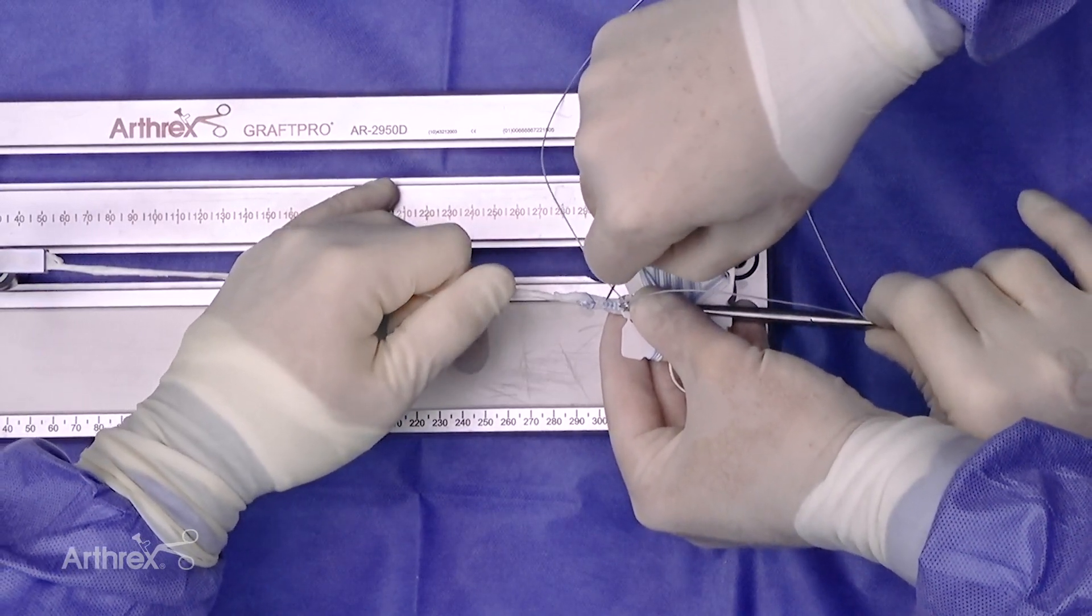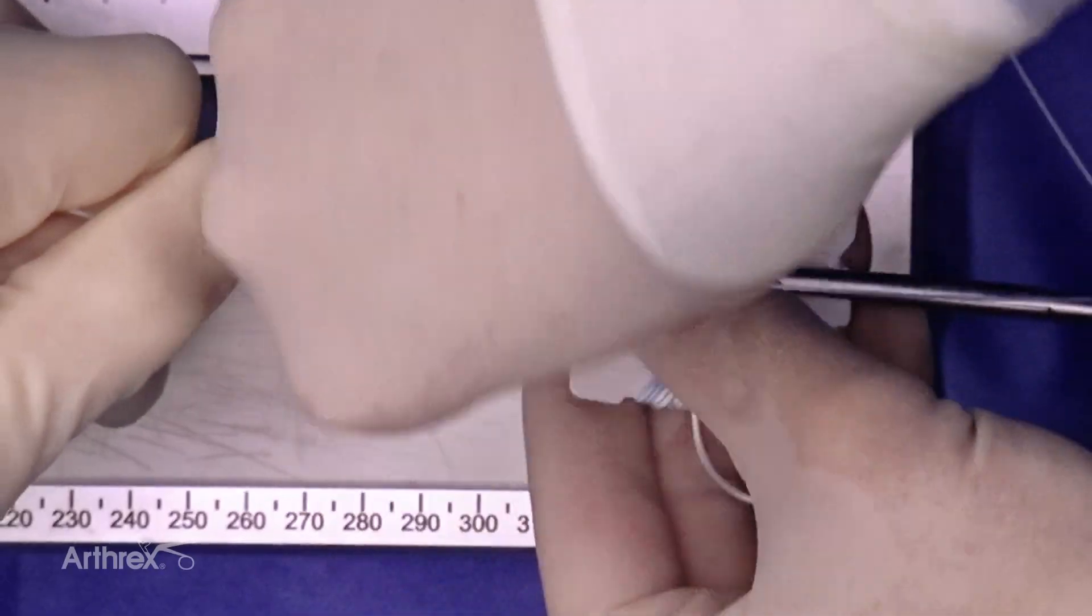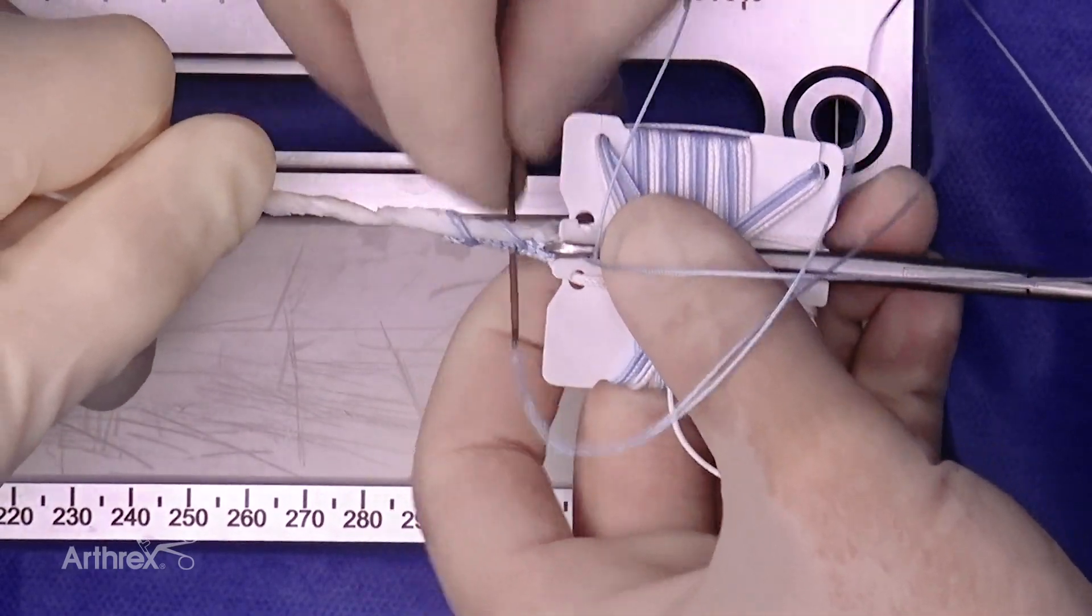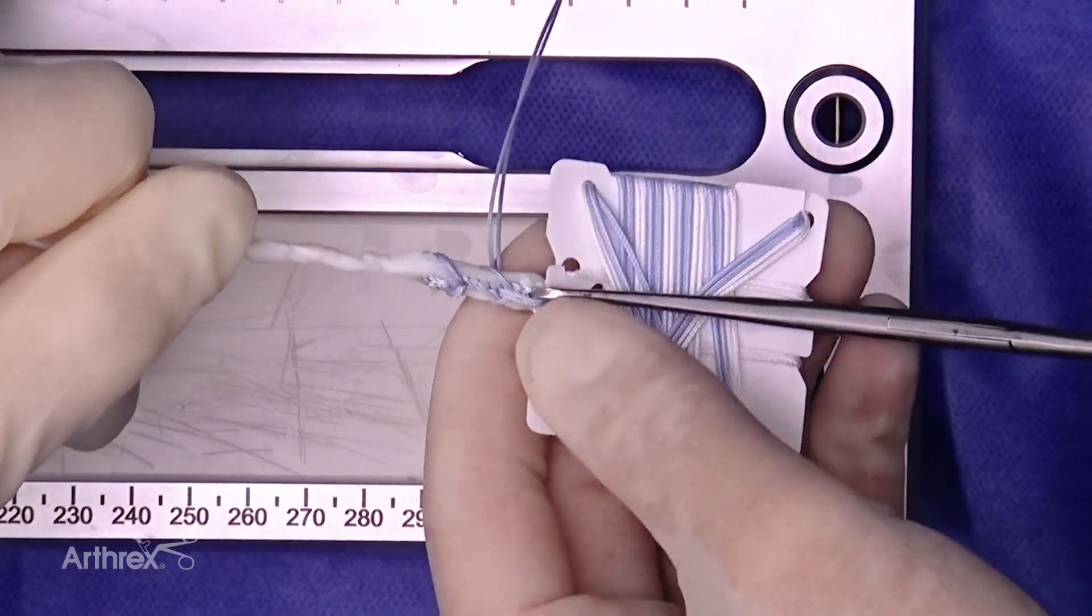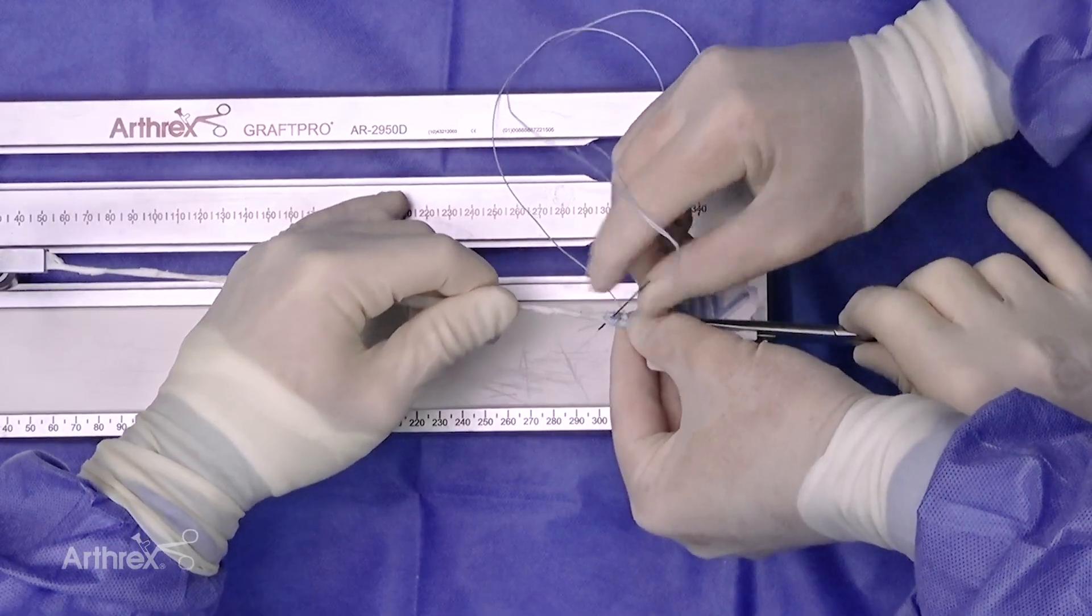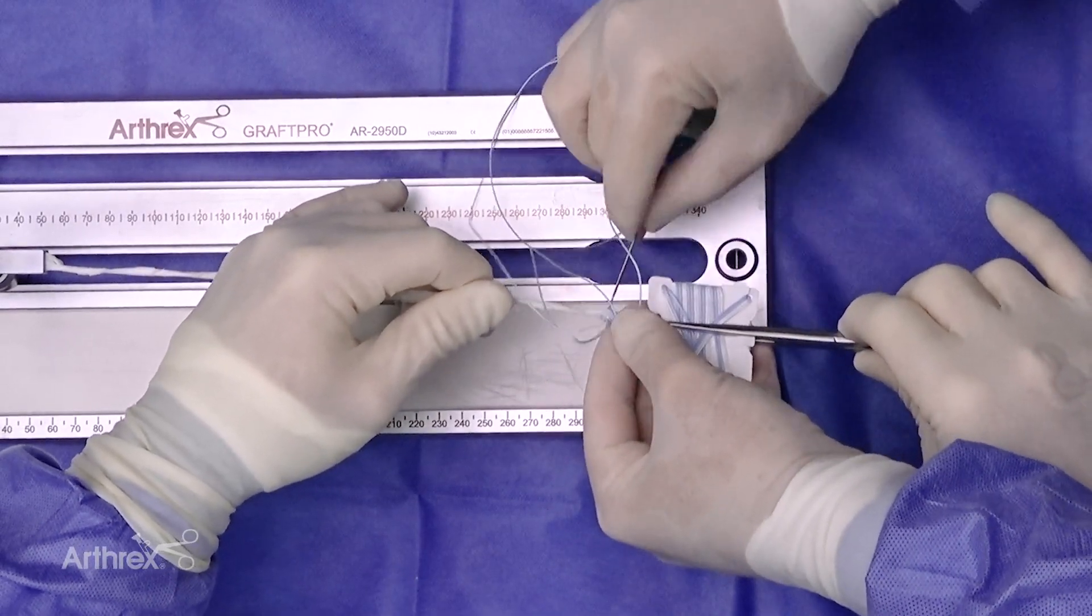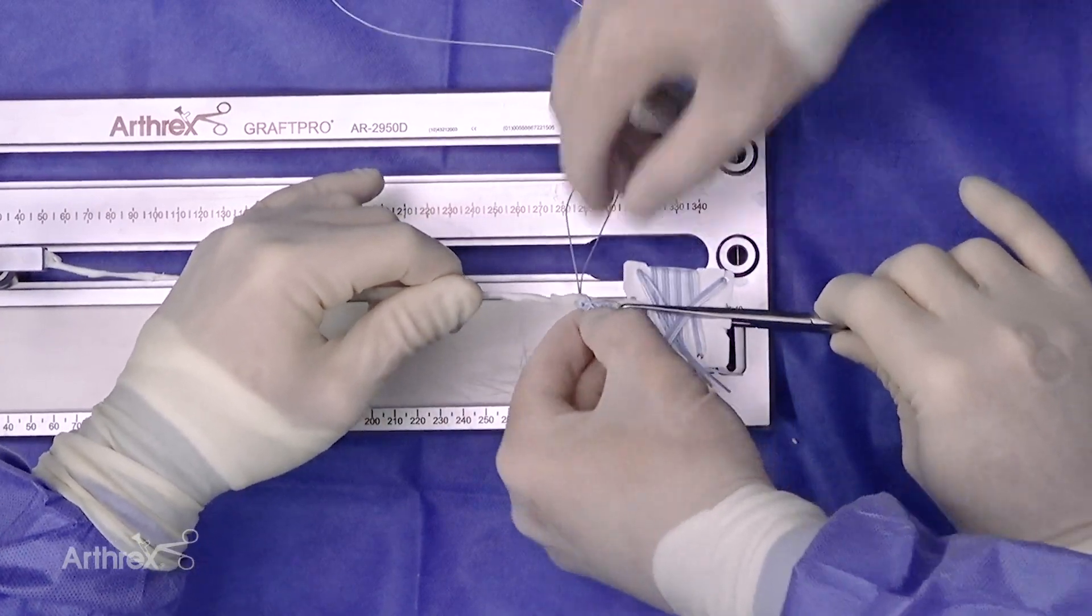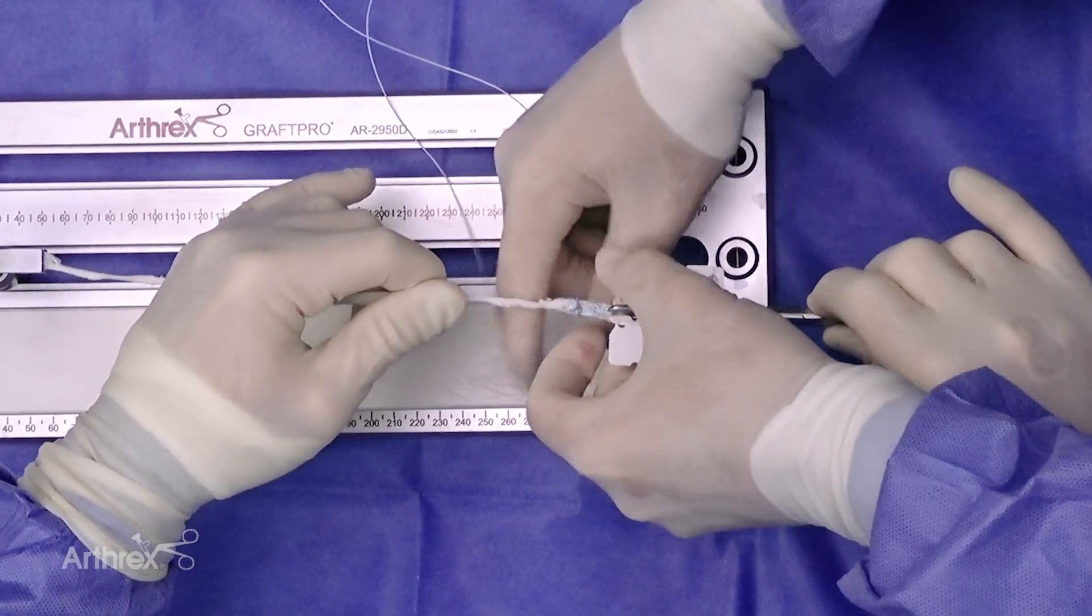The suture is then passed again through the fiber tag in the graft, approaching distally. This allows security of the graft as well as security of the graft to the tightrope. A final stitch is then placed at the end of the fiber tag end graft, completing the loop suture technique.